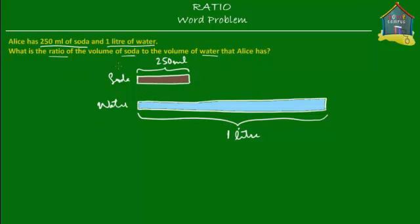What we have to find is the ratio of the volume of soda to the volume of water. Alice has 250 milliliters of soda and one liter of water, so you might want to write this as 250 milliliters to one liter, making the ratio 250 to 1. At first sight this looks right, but this would actually mean she has 250 times as much soda as water — which is not correct, because the amount of soda is actually smaller than the amount of water.